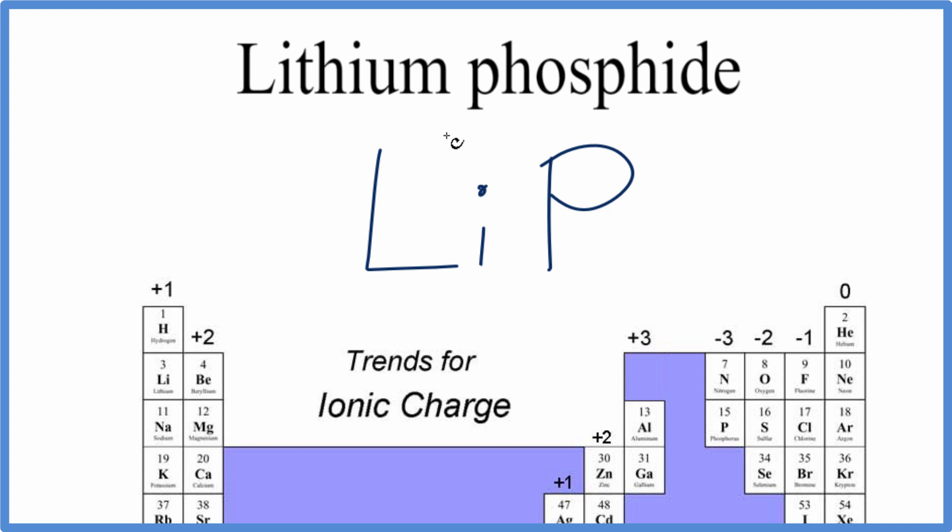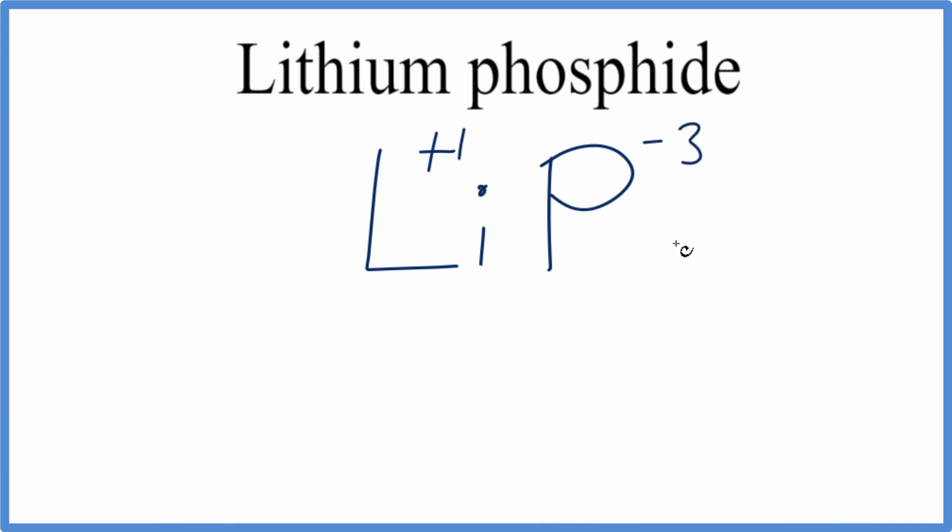So lithium, we look and see that's plus one, and then phosphorus, that's minus three. So these charges aren't balanced. What we can do is change the subscript here to balance the charges. If I put a three right here, three times plus one gives me plus three, and that'll cancel out the minus three, give me a net charge of zero. That would be the correct formula for lithium phosphide, Li3P.